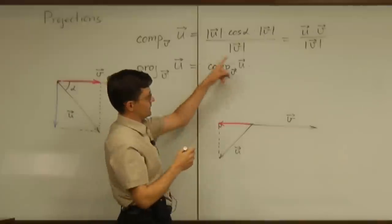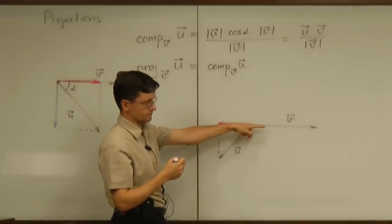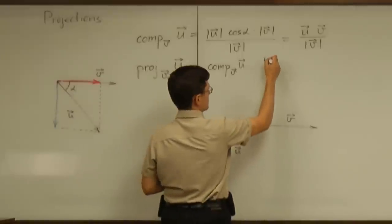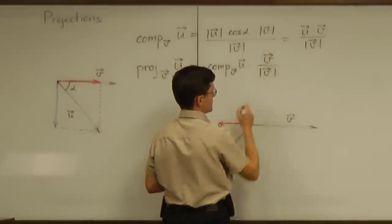And I would multiply that component, that number, by a vector in the direction of v. And the vector will be v divided by the magnitude of v.